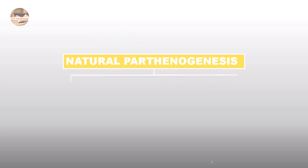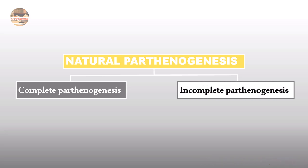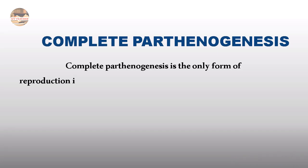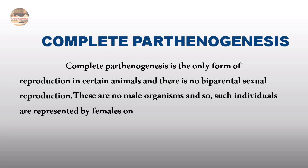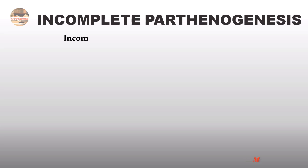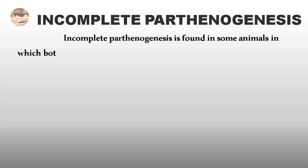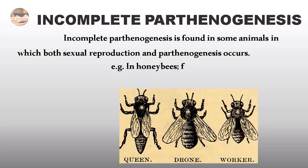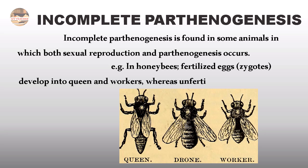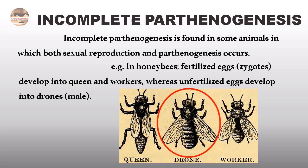Natural Parthenogenesis is also of two types: Complete Parthenogenesis and Incomplete Parthenogenesis. In Complete Parthenogenesis, it is the only form of reproduction in certain animals and there is no biparental sexual reproduction — no male organisms exist, and such populations are represented by females only. Incomplete Parthenogenesis is found in animals where both sexual reproduction and parthenogenesis occur. Example: in honeybees, fertilized eggs (zygotes) develop into queens and workers, whereas unfertilized eggs develop into drones — the male individuals in the honeybee colony.